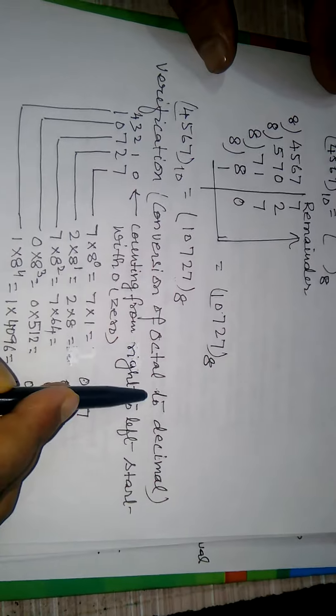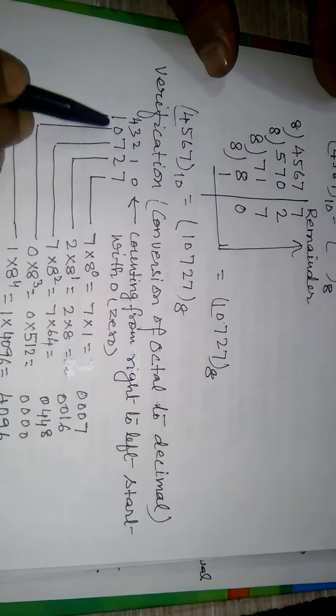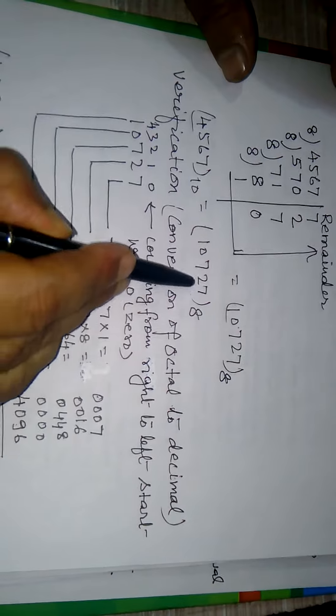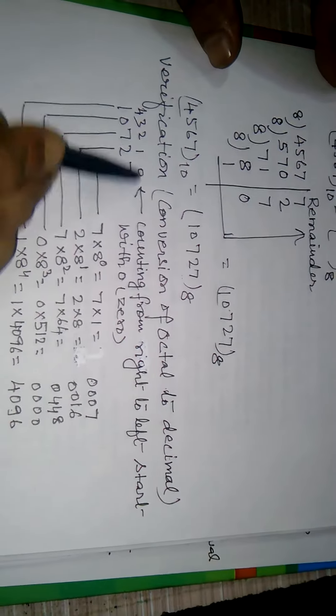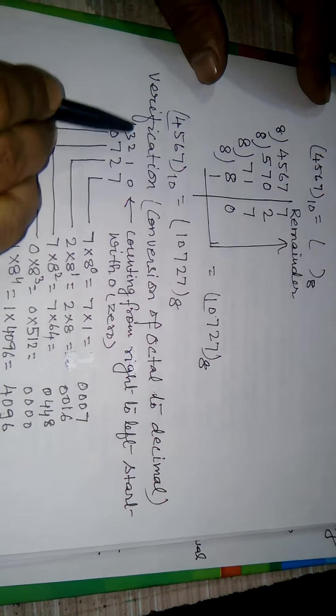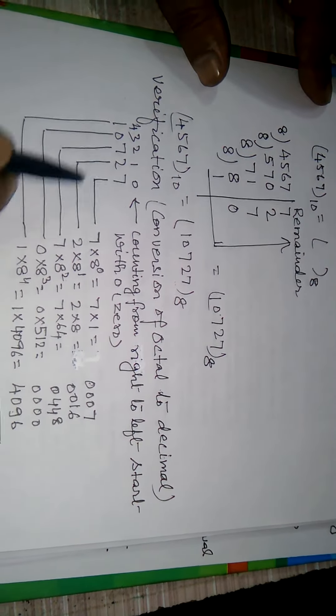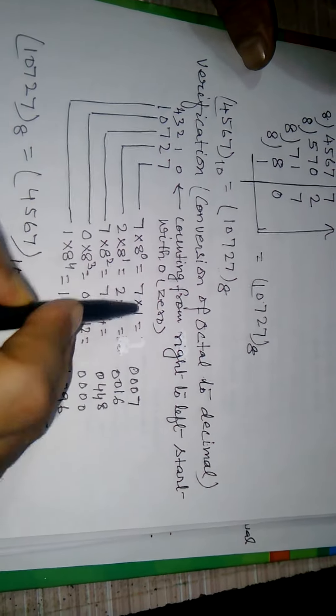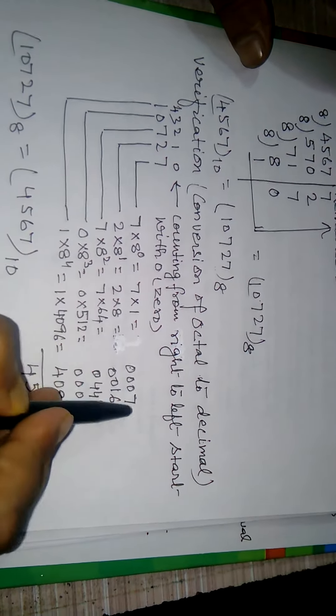Verification that is conversion of octal number to decimal number. For 10727 counting from right to left 0 1 2 3 4. Now 7, it can be written as 7 into 8 raised to the power 0 equals to 7 into 1 equals to 7.